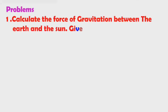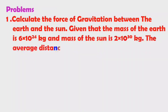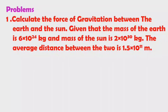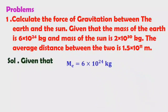Calculate the force of gravitation between the earth and the sun, given that the mass of the earth is 6 into 10 power 24 kilograms and the mass of the sun is 2 into 10 power 30 kilograms. The average distance between the two is 1.5 into 10 power 11 meters. Now we will see the solution. Mass of the earth is 6 into 10 power 24 kilograms — remember this value.